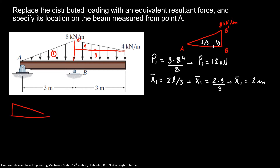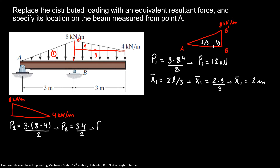Now we're gonna find the area of the next triangle — area number 2. Here the load is 8 kN/m at one end and ending at 4 kN/m. So my area 2, P₂, is equal to base 3 times height (8 minus 4) over 2. So P₂ is equal to 6 kN.